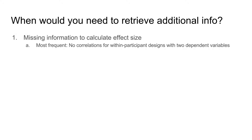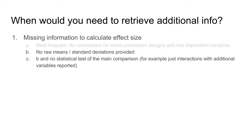This can be because you are missing correlations, but note that we have devised a few ways around this problem because it is true for most within-person design papers. A second reason can be that you are missing information to compute effect sizes from raw data, that is means and standard deviations.